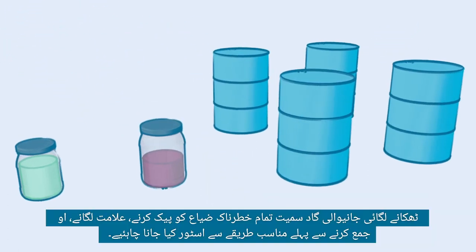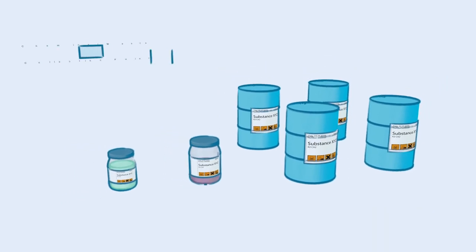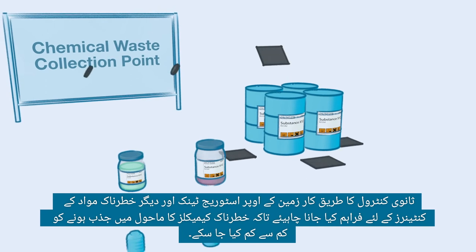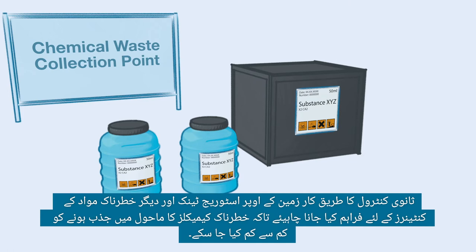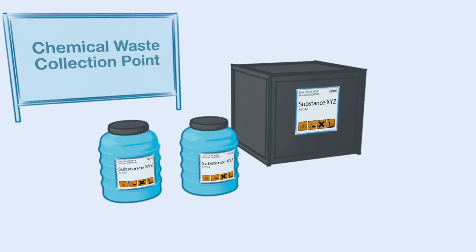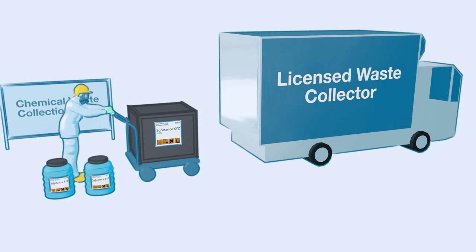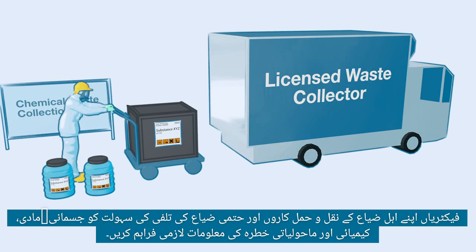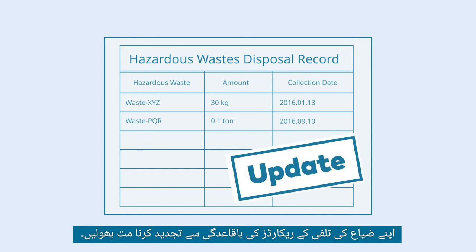All hazardous waste, including the treatment sludge, should be packed, labeled, and stored properly before collection. Secondary containment should be provided for all above-ground storage tanks and other hazardous material containers, in order to minimize the chance of hazardous chemicals leaching into the environment. Be sure to use licensed waste collectors for these hazardous wastes. Factories must provide physical, chemical, and environmental hazard information to their qualified waste transporters and the final waste disposal facility. Do not forget to regularly update your waste disposal records.